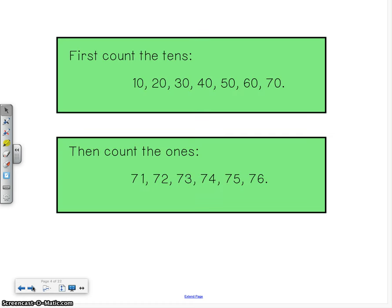Well, we could first count the 10s. 10, 20, 30, 40, 50, 60, 70. Then count the 1s. 71, 72, 73, 74, 75, 76.